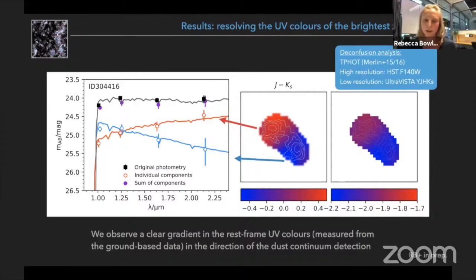So for this I used a deconfusion analysis using the T-PHOT software, where the high resolution image is our single band Hubble data, and I then use this to deconfuse the low resolution YJHK data from UltraVISTA. And in this analysis you can clearly see again the two different colors of the two different components pointing towards this dust detection in the upper left of this image.